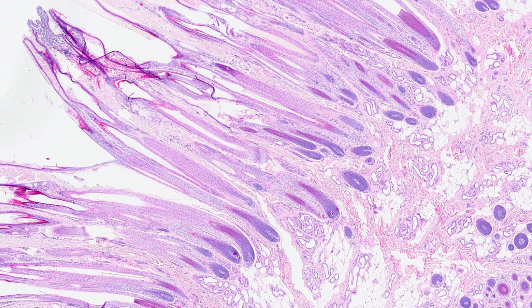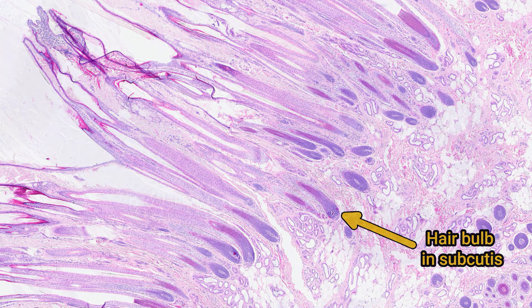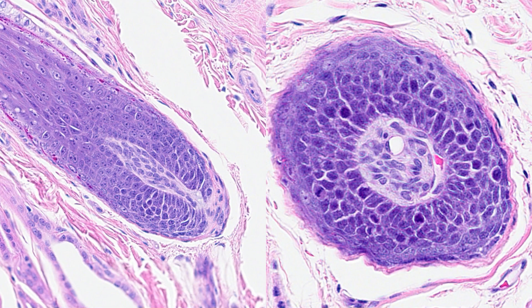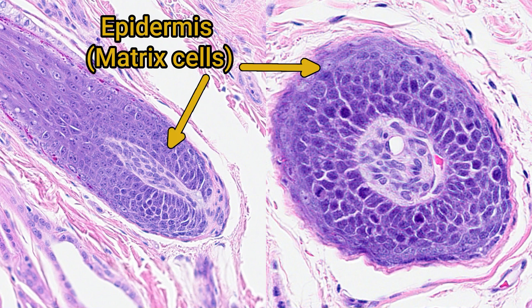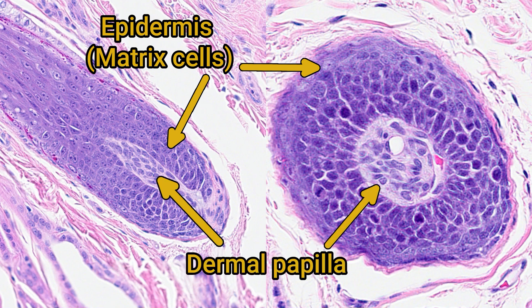During anagen, the hair follicle extends into the deep dermis and sometimes into the subcutis. Right at the base of the follicle there is the hair bulb, made up of an epidermal component wrapped around some mesenchymal cells — the dermal papilla. The cells here play an important role in regulating hair growth, with the vascular connective tissue supplying nutrients and oxygen to the dividing epidermal cells.